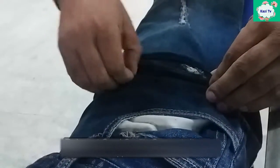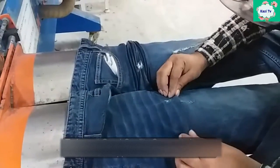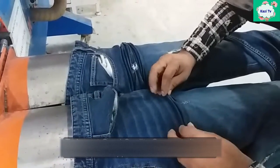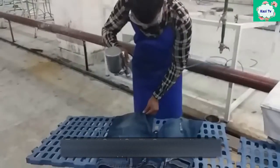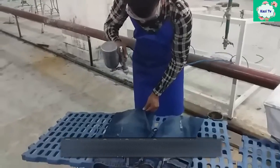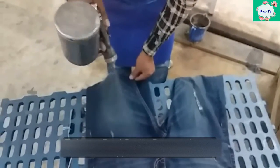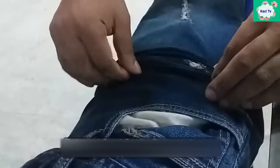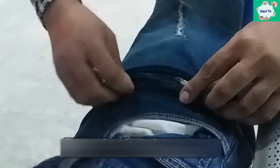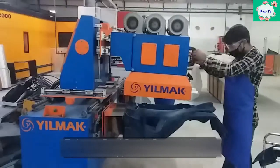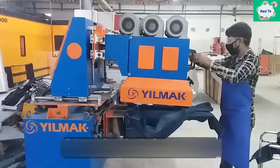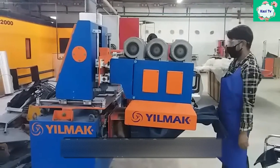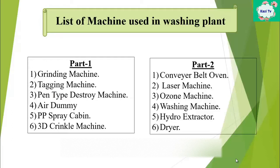3D crinkle machine: this machine is used to make 3D crinkle. This crinkle is slightly different from normal crinkle — this type of crinkle looks three-dimensional. At first, resin is sprayed on that specific area of the garments, then the garments are put into the handle of the machine and the 3D shape is made manually. Finally, heat is applied for one minute.